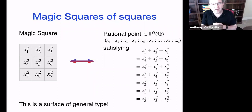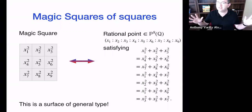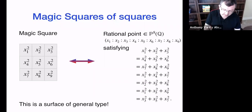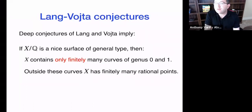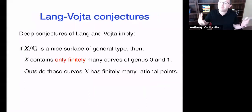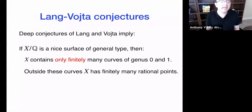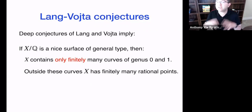As you can imagine, there is an algebraic variety parametrizing magic squares of squares, and this variety has points — for example, the point where all coordinates are one is a perfectly good rational point. You get a surface in P^8, a complete intersection with six equations, and it's a surface of general type. We don't know if a three-by-three magic square of squares exists; this is still an open problem.